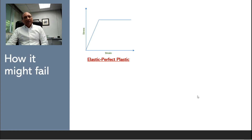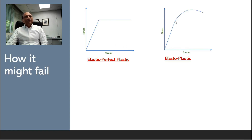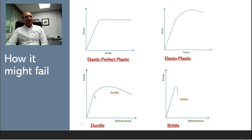In terms of how a material might fail: the idealized elastic-perfectly-plastic model means the material remains linear and then at some point becomes completely plastic and continues indefinitely — a bilinear representation most common for steel and metals. There is also an elastic-plastic model where the material yields gradually with possible strain hardening. Some materials are ductile, meaning they continue to deform significantly before reaching their fracture point, while others are brittle — after reaching the maximum limit, they fail or drop in stress capacity very quickly.